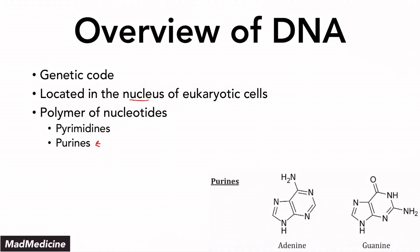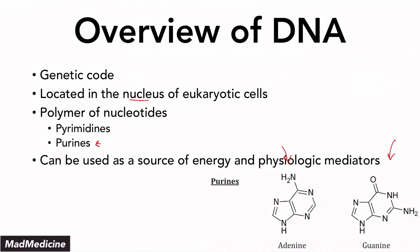The purine nucleotides are adenine and guanine. When it comes to nucleotides, they can be used as a source of energy as well as physiologic mediators. Both pyrimidines and purines can do that, but it's more commonly associated with purines.